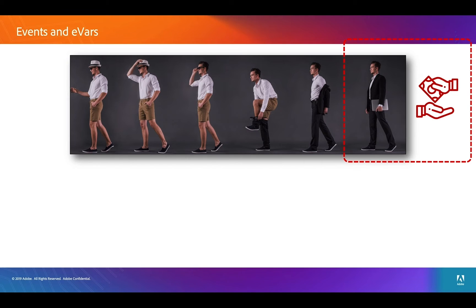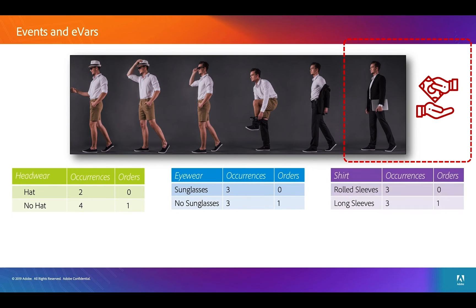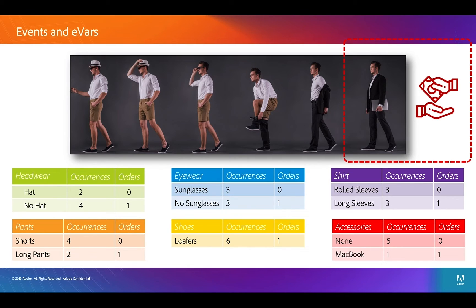At the end of this sequence, if you had a purchase, the reports would show how orders are allocated to the different values. In the headwear report, you had two occurrences for a hat and four where there was no hat. The order is at the very end, and even though on the order page you didn't set headwear to no hat, it gets credit because it persists. Typically the latest value will get credit for the event. I hope this helps you understand conversion events — happy coding.